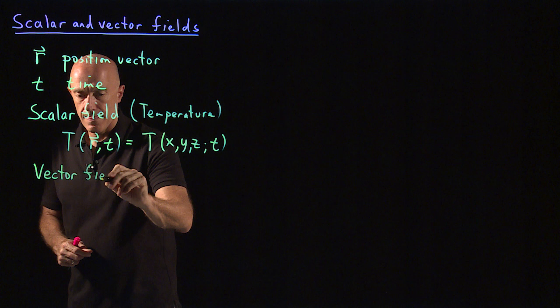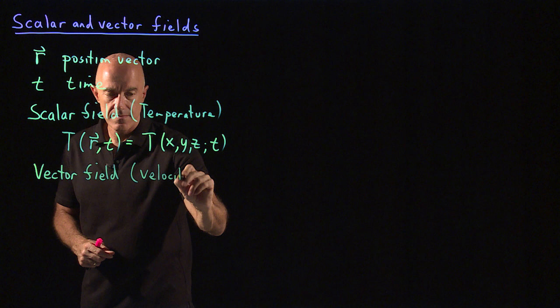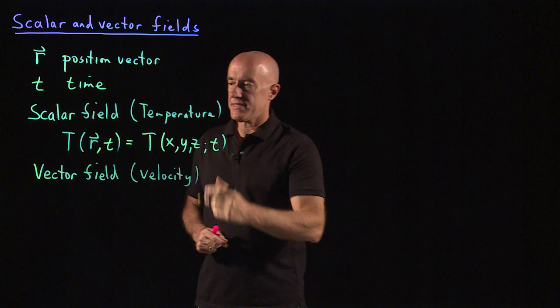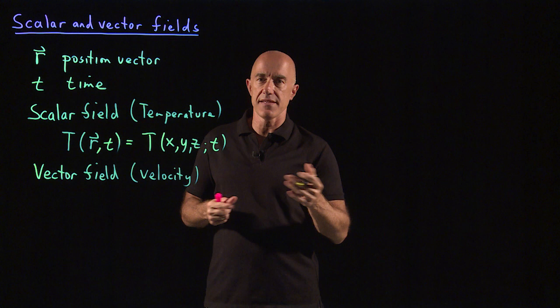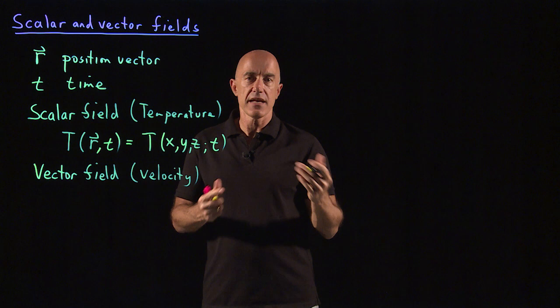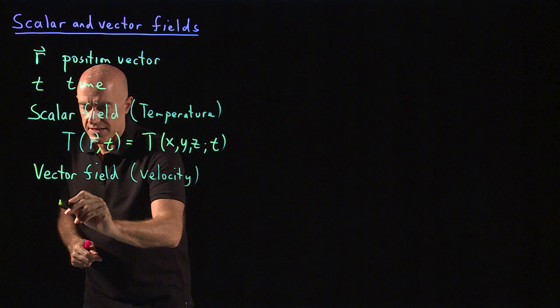We can also have a vector field. An example would be the velocity of a fluid. So the first example could be the temperature of a fluid. The second example could be the velocity of the fluid. So the fluid is flowing. It has a certain velocity. The velocity can depend on where you are in the fluid, the spatial variable, and it can also depend on time.